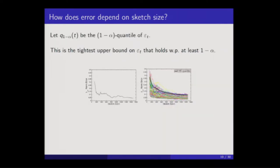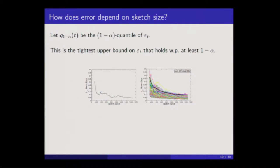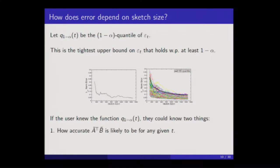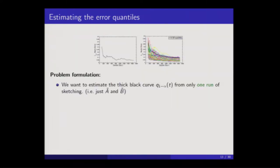This motivates a way of formulating error estimation in terms of the quantile curve of these sample paths. I'll define q(t) to be the 1-minus-alpha quantile of the error variable at any sketch size. In this plot, the 99% quantile curve is the thick black curve, such that 99% of the sample paths lie below it. This curve is something the user would really like to know in practice — if they knew it, they could determine how accurate the sketch product is likely to be for any sketch size, and use it in a predictive way to determine how far out they need to go to achieve a target accuracy.